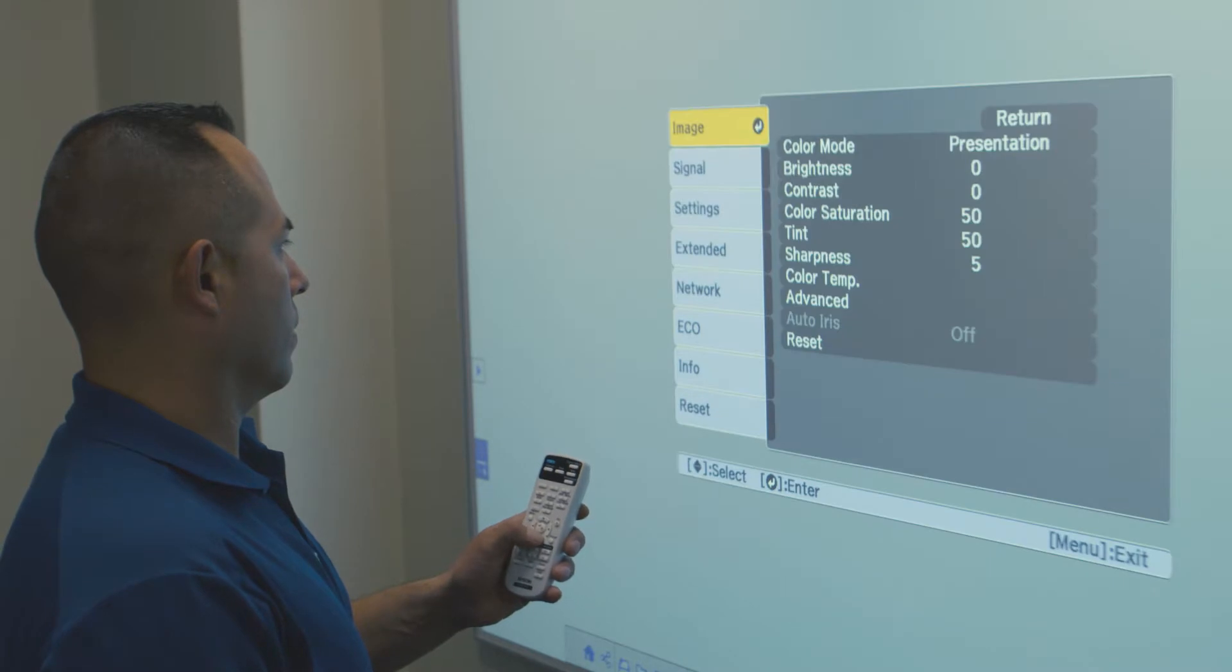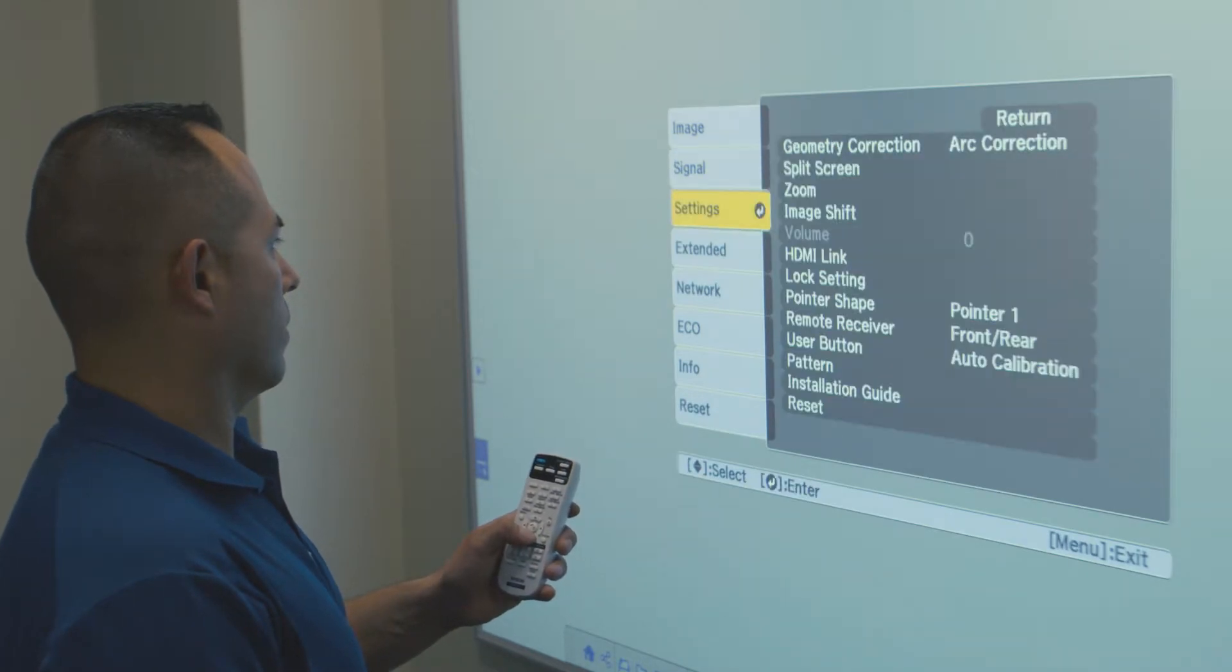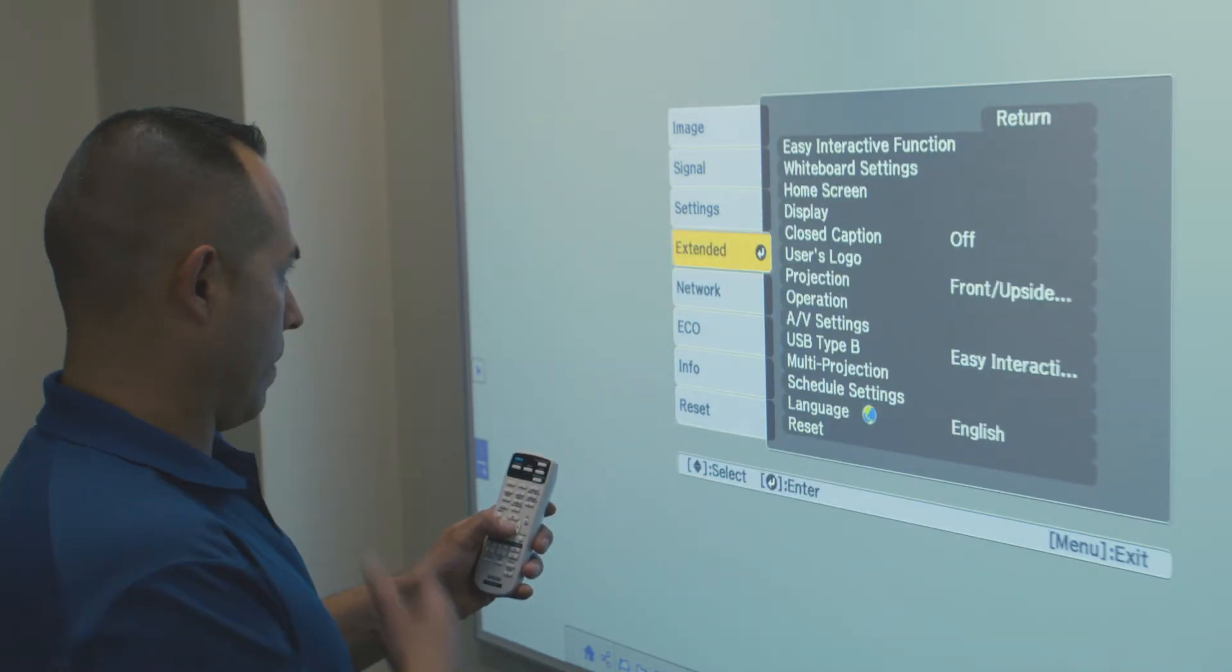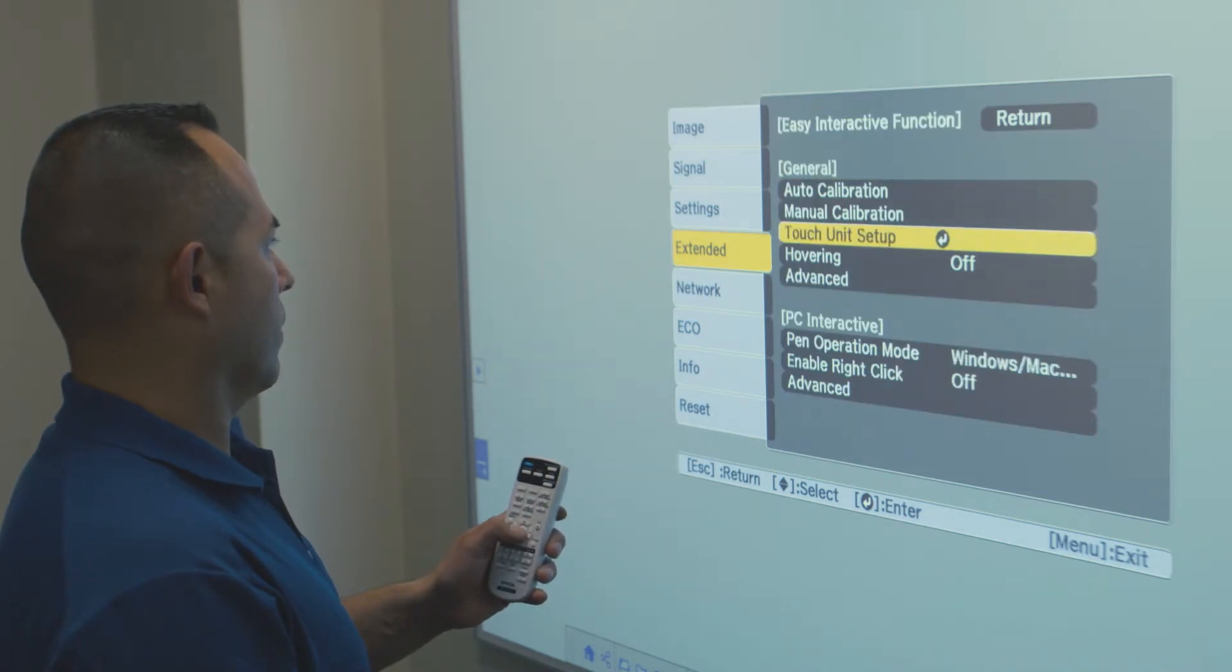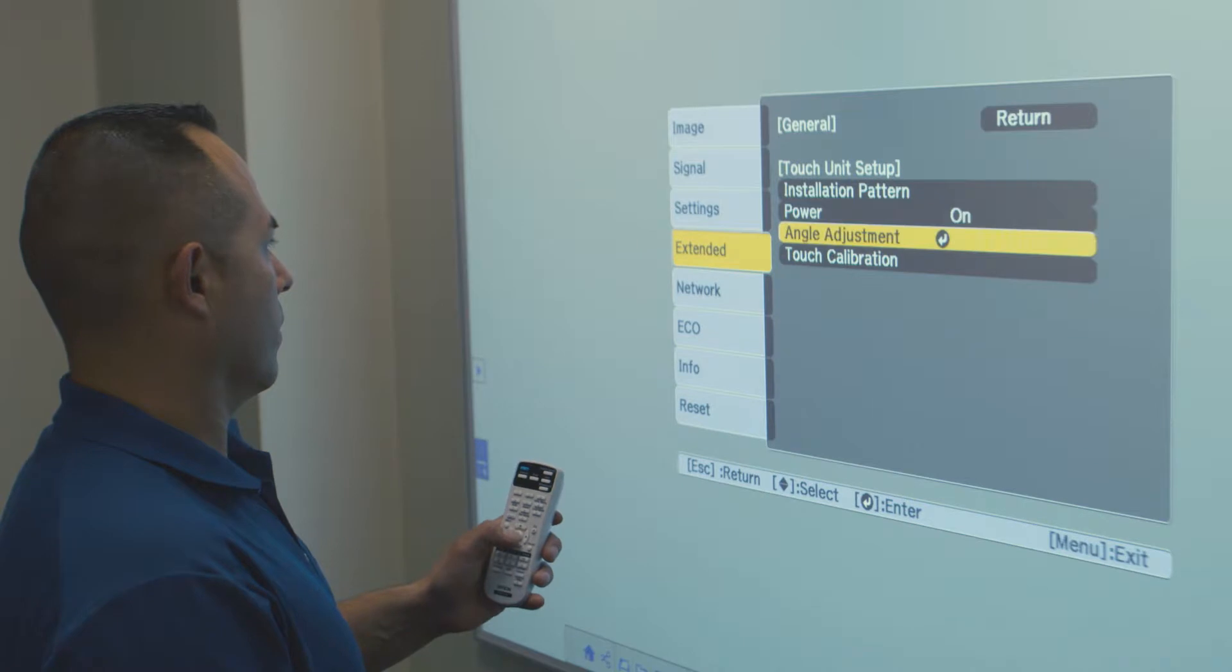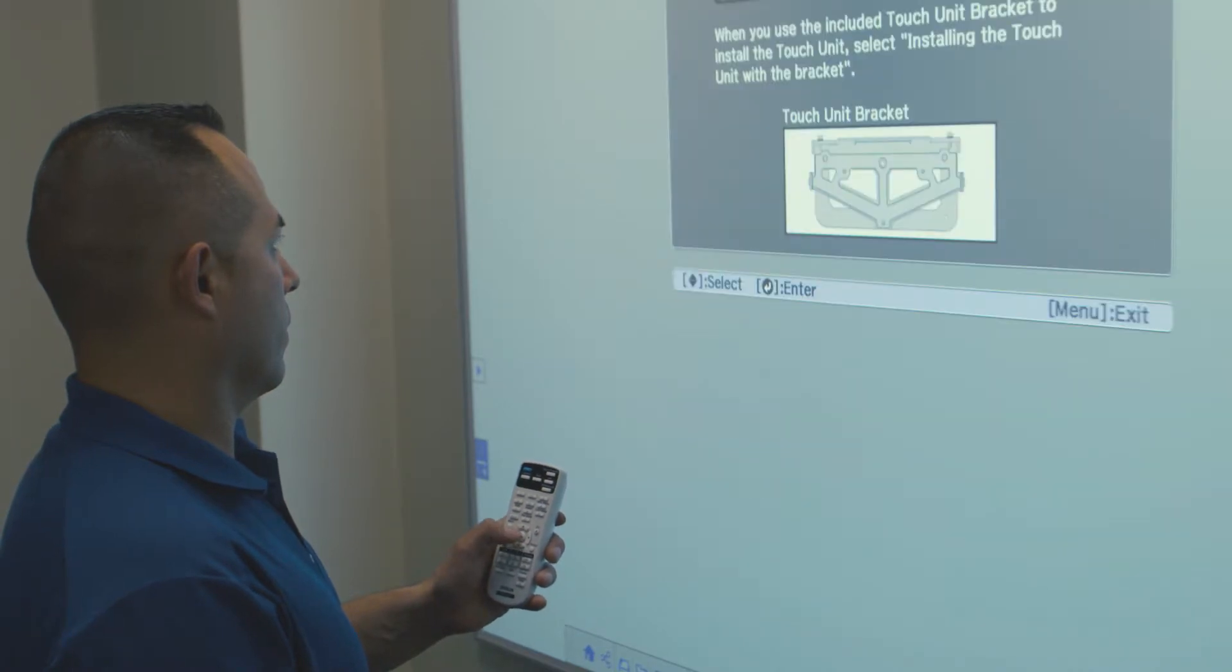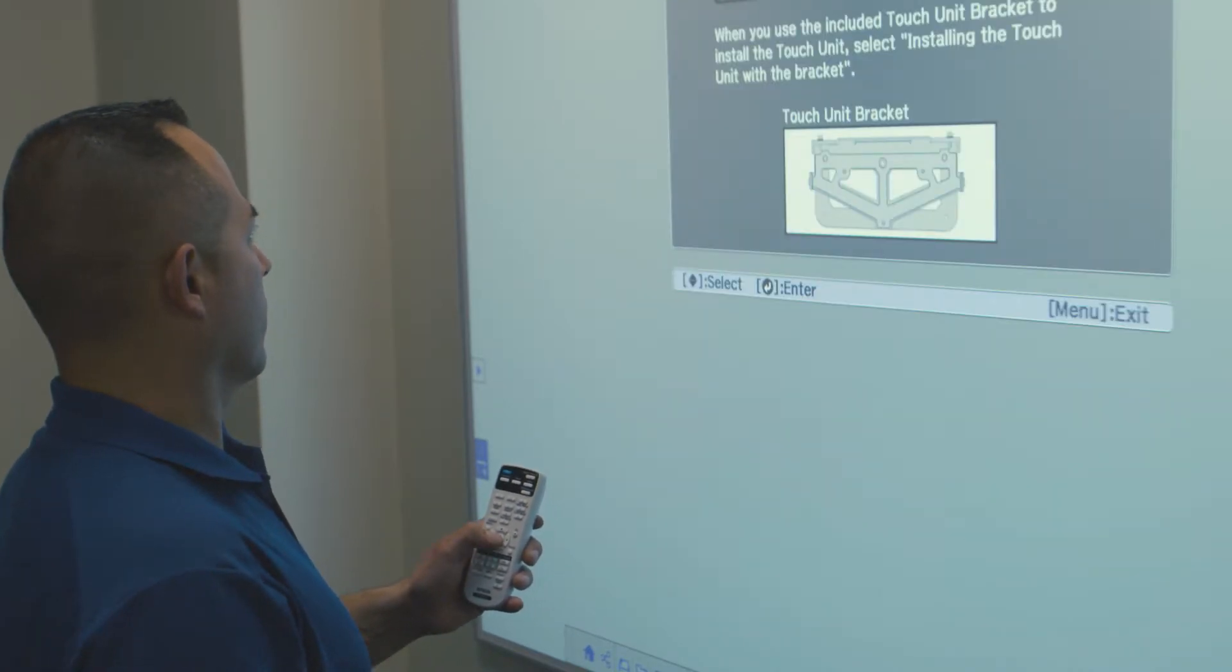We first use the remote control of the projector. Go to Settings, go into Extended, then into Easy Interactive Function and Touch Unit Setup and Angle Adjustment.